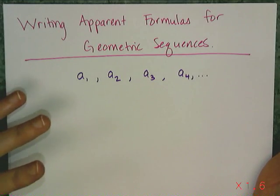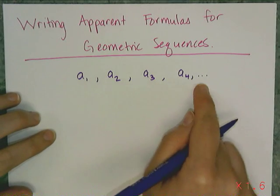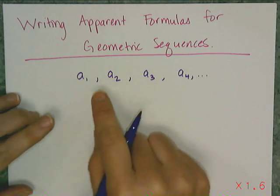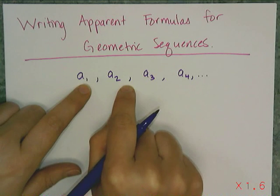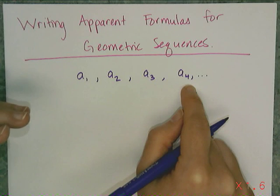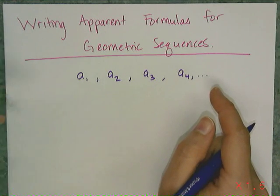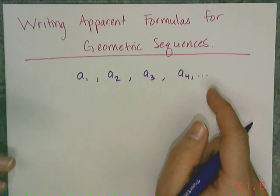I will tell you that an apparent formula is not at all recursive, meaning it doesn't use previous values to find future values. All it's going to use are these little subscript numbers, the 1, the 2, the 3, and the 4, or the term's location in the sequence. So if I want to find the fifth term in a sequence, all I'm going to do with the apparent formula is plug in a 5, and it'll give me that value.